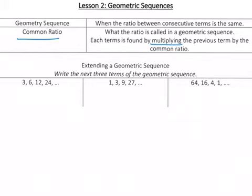So let's do some examples. It says to write the next three terms of the geometric sequence. Well first, I do want to find out what the common ratio is. So as I'm looking at my first sequence, I see that I'm multiplying by 2. So that's going to be my common ratio.